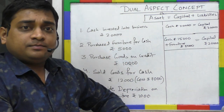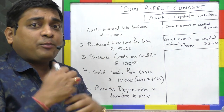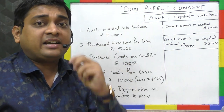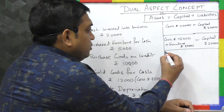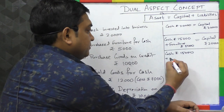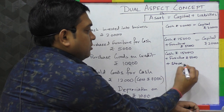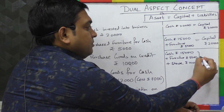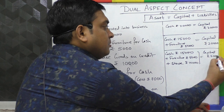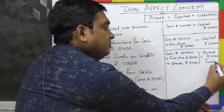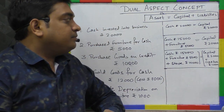Transaction 3: Purchase goods on credit rupees 10,000. Goods (stock) is the resource and the creditor — the person from whom we purchased on credit — is the source. So the equation becomes: Cash ₹15,000 + Furniture ₹5,000 + Stock ₹10,000 = Capital ₹20,000 + Creditors ₹10,000. Total resources: ₹30,000, total sources: ₹30,000.